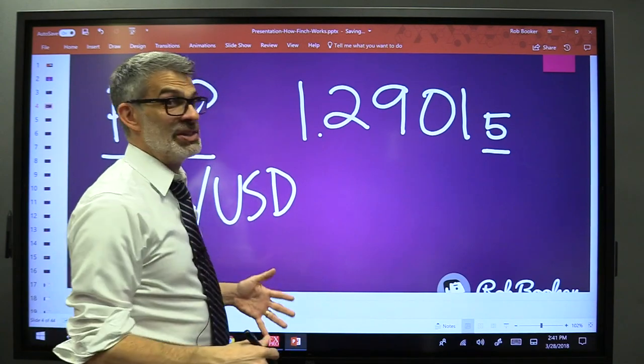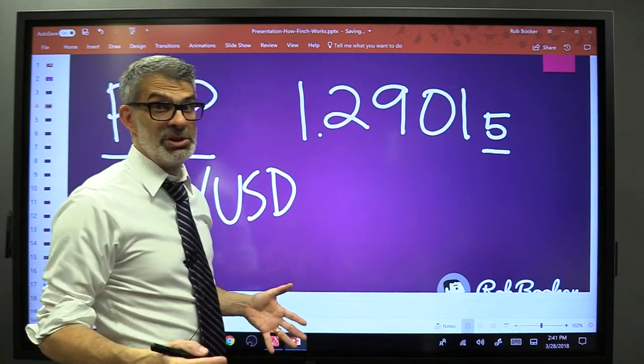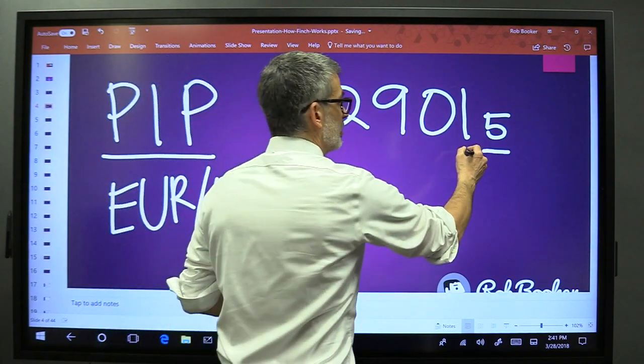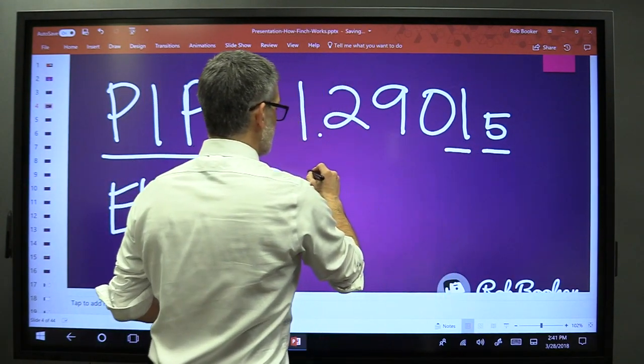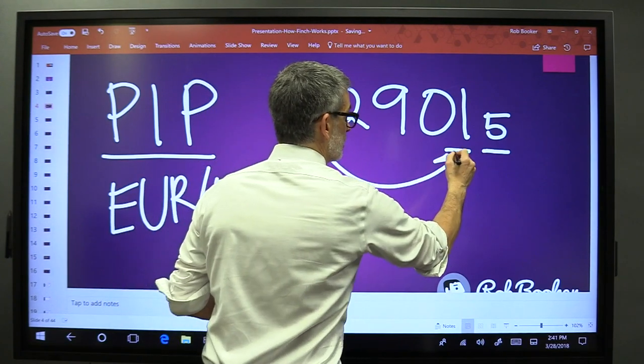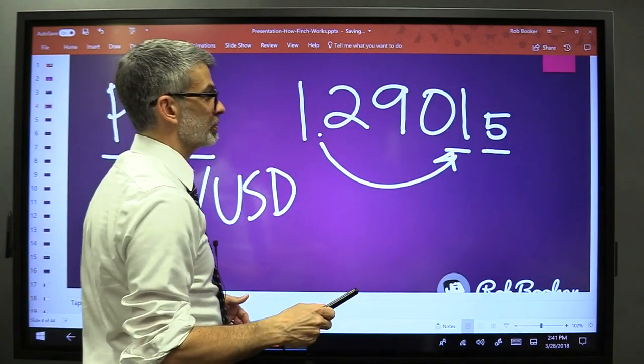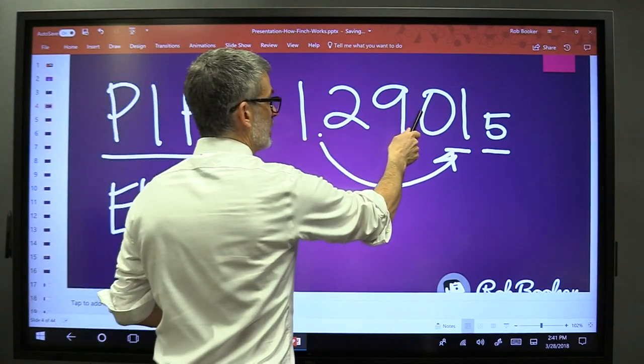A pip is the basic unit of measurement that we talk about in the world of currency trading. And it is the fourth number after the decimal place on most currency pairs. 1.2901.